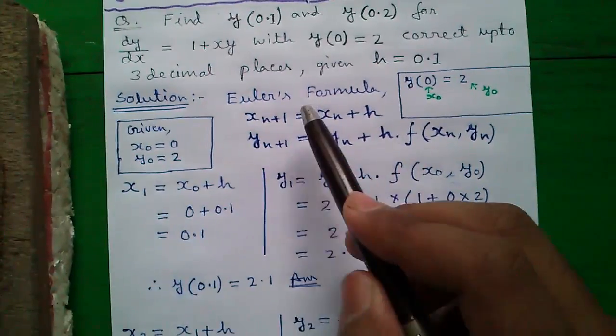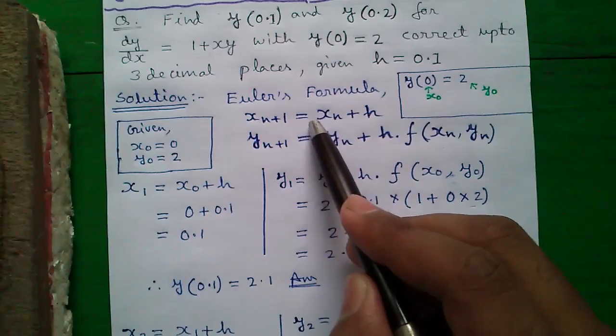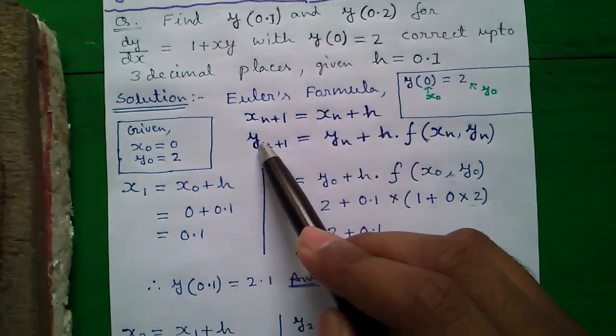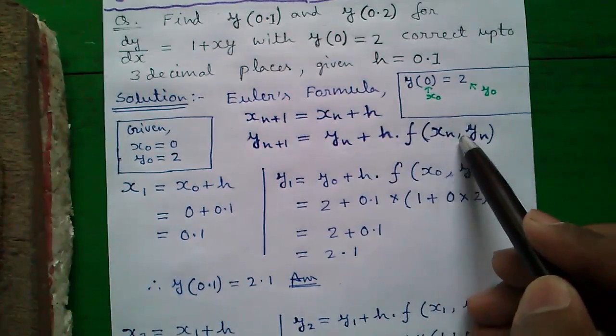So what's our solution? First you have to know the Euler's formula. It's very simple. x_{n+1} = x_n + h and y_{n+1} = y_n + h into function of x_n comma y_n.